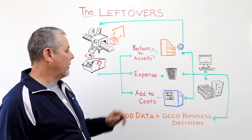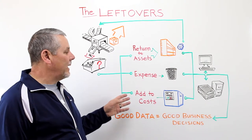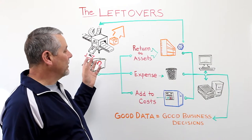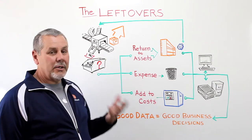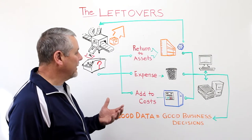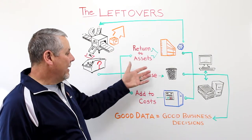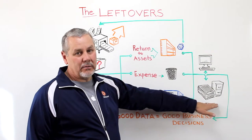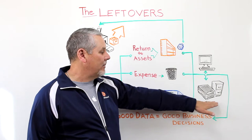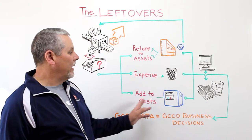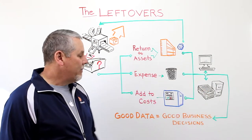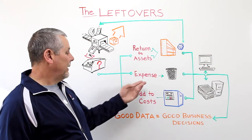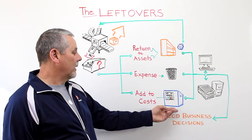With any of these three choices, you need to update your accounting to make sure that you've accounted for the cost of these leftovers. Now, if you are running your business and your entire process is a manual process, that means that somebody, when they make these decisions, has to go and update the records. You've got to have somebody who's following through to make sure that everything gets updated and your accounting package gets updated — so you know what got returned, expensed, or added to the cost of the product.